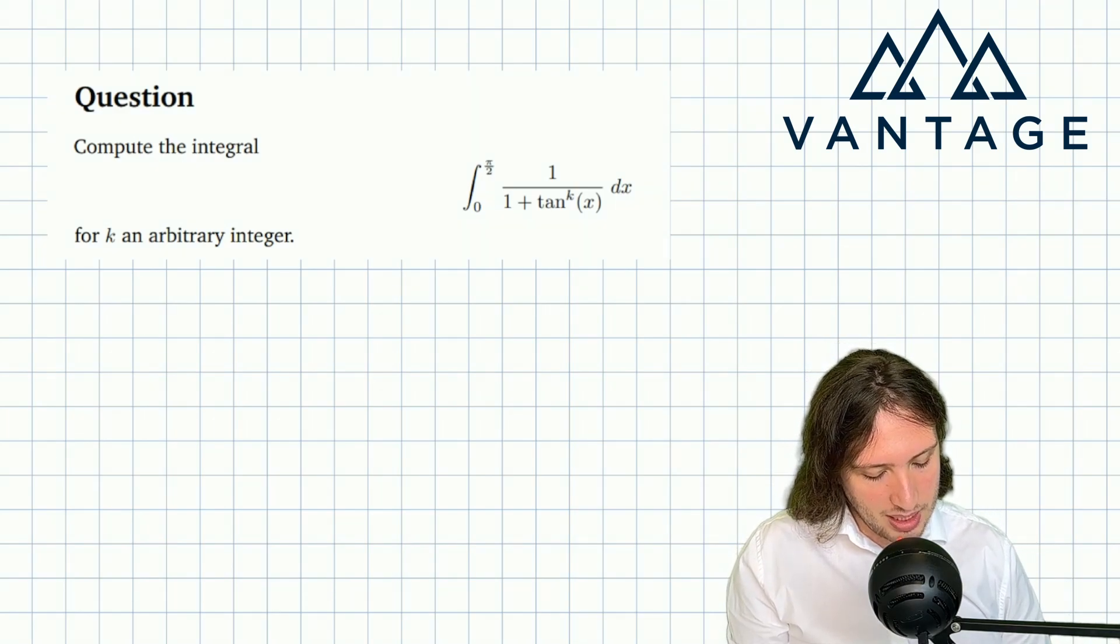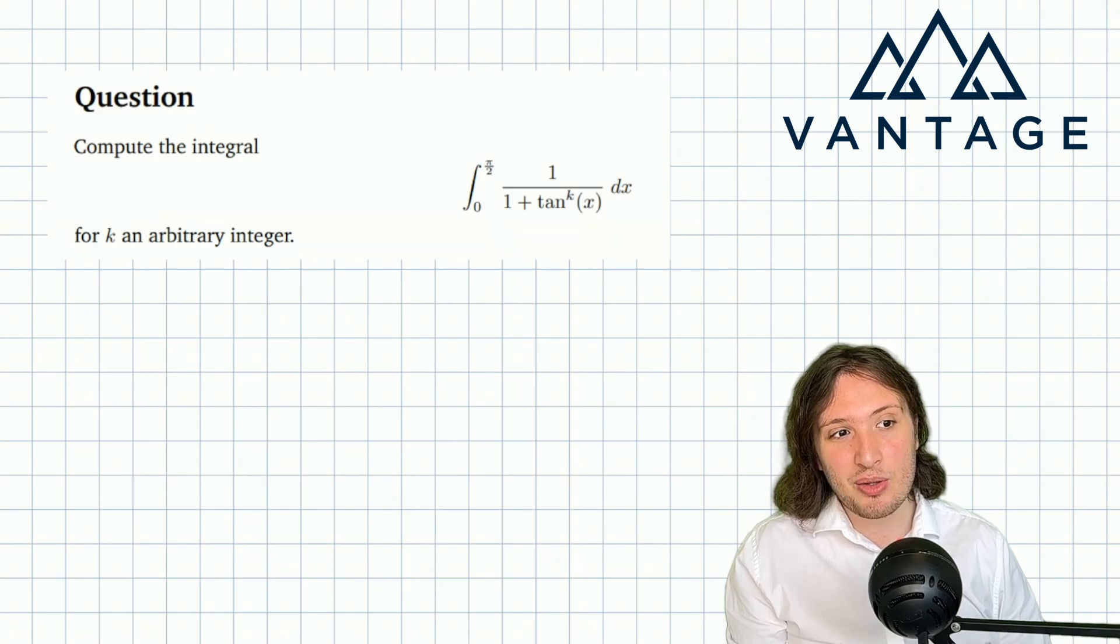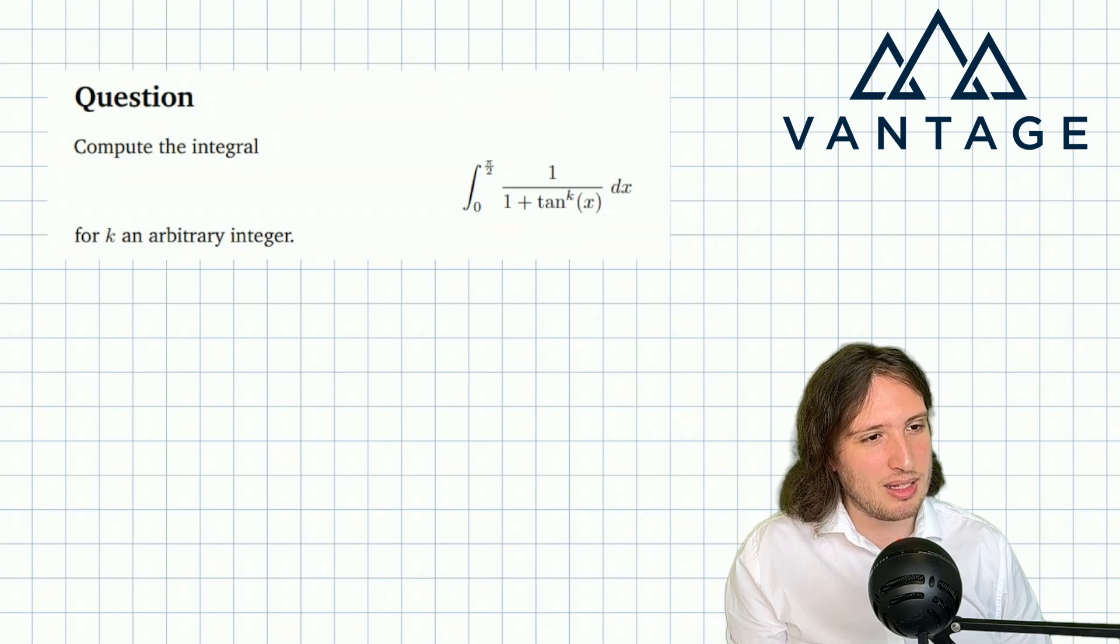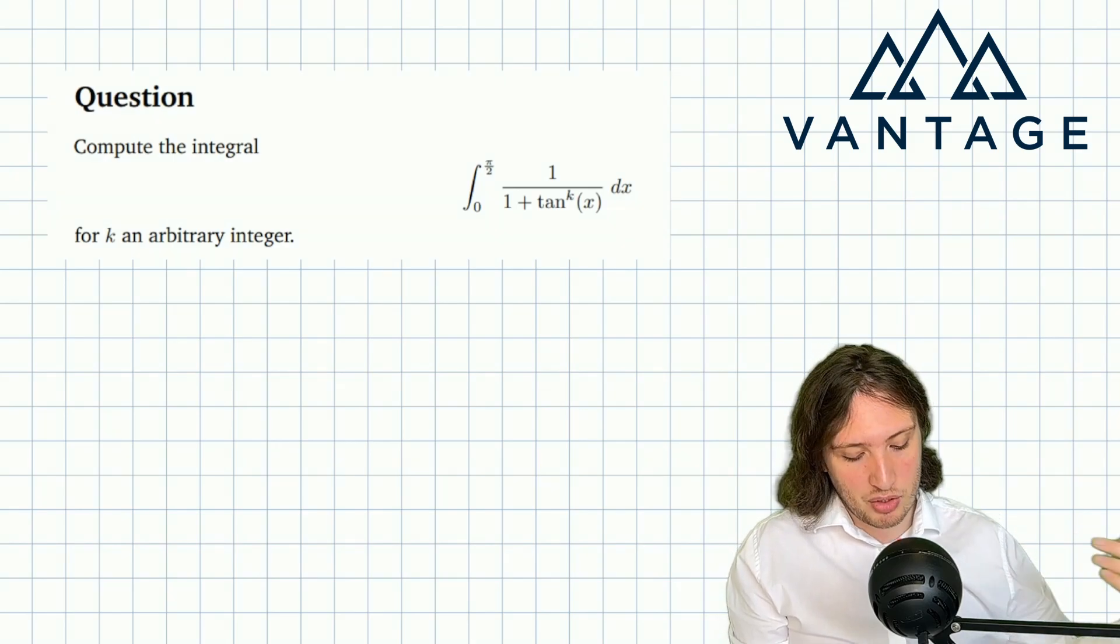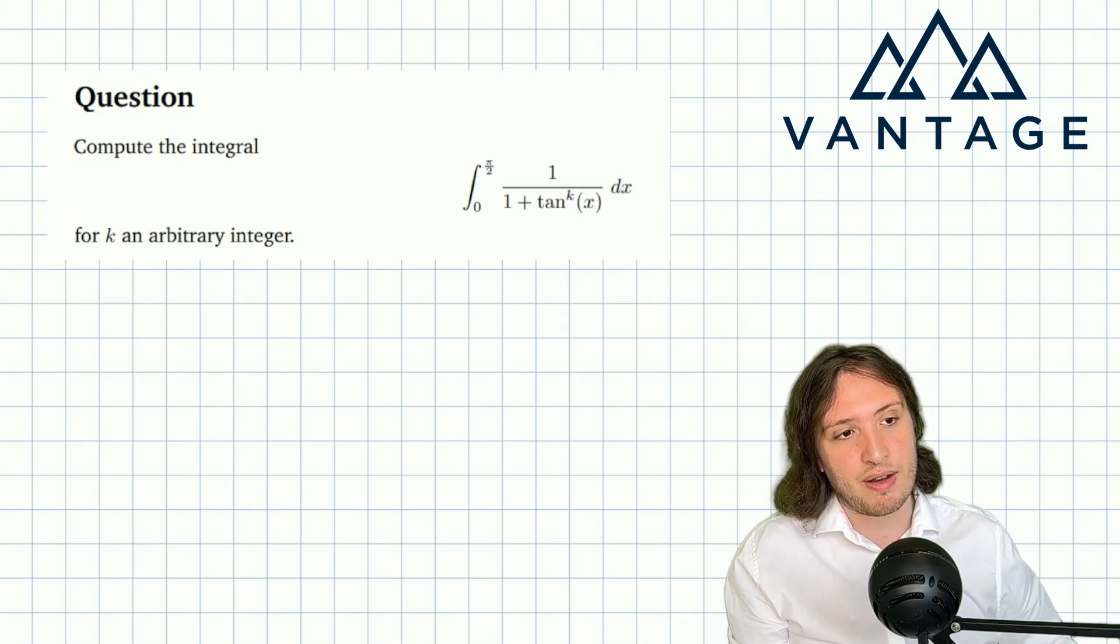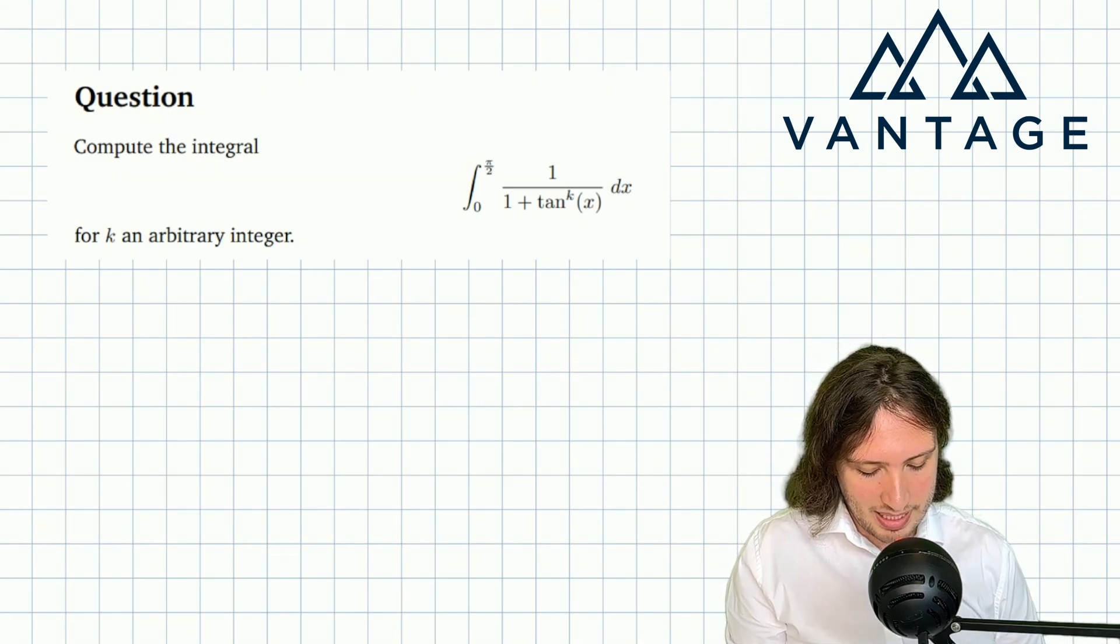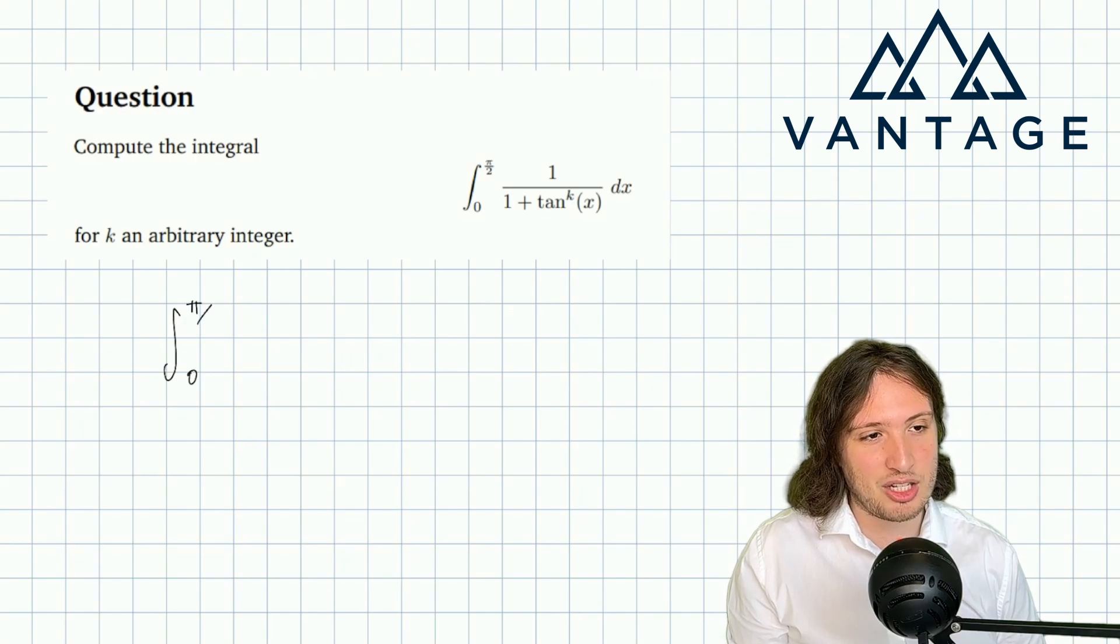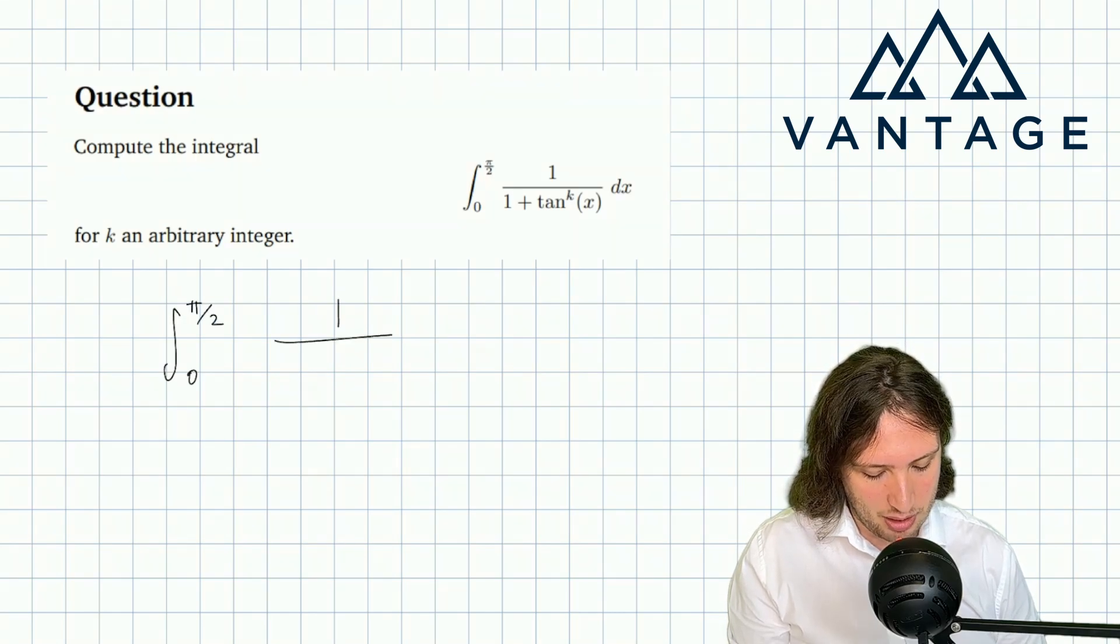So in terms of obvious lines of attack, not really any obvious substitution to try, nor is there really any obvious line of attack using integration by parts. So maybe we should exploit the fact that we've got a trig function here and we know that there are certain properties identities that trig functions obey. In particular, in lieu of anything else obvious to do, I think something to try is surely to convert the tan to a sine over cos.